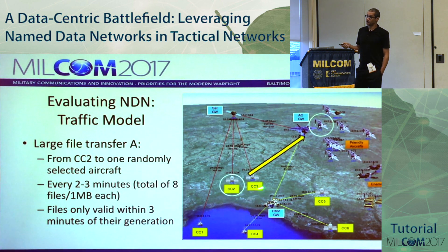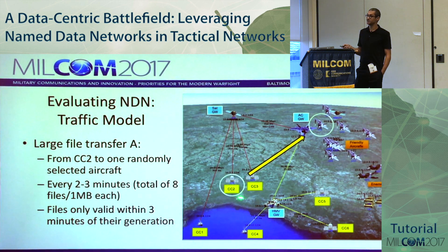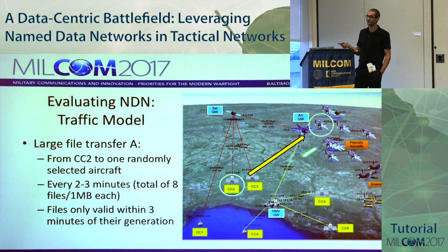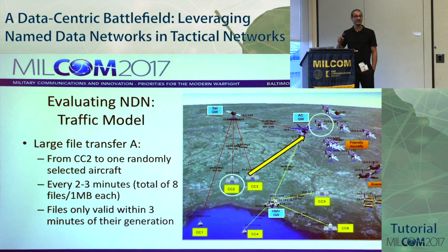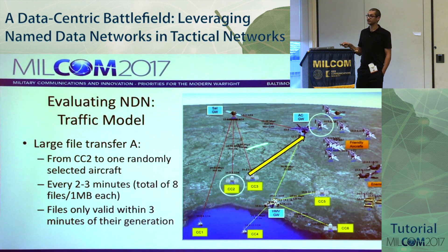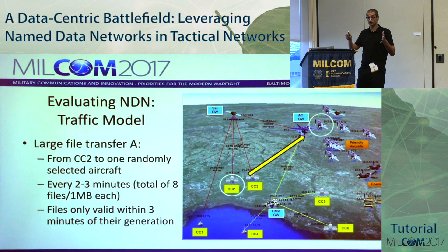For file transfer, there are three types of data. First, large files that need to be transferred from a specific command center to a randomly selected aircraft. These are generated every two to three minutes — about eight files total over the 20-minute run, each one megabyte. The files are only valid for three minutes from generation time; if delivery takes longer, they should be discarded.